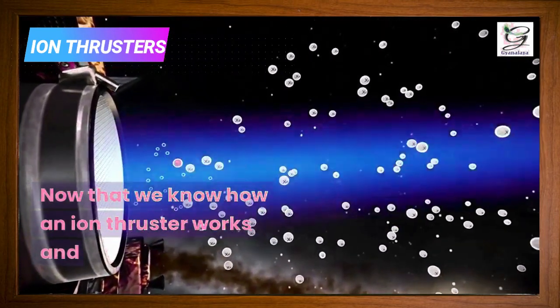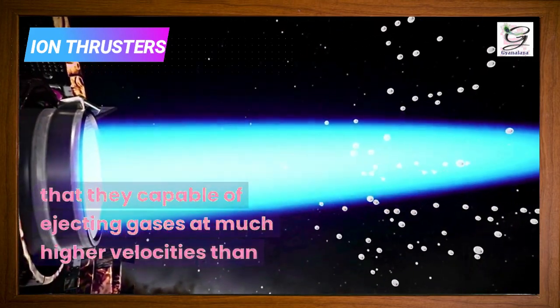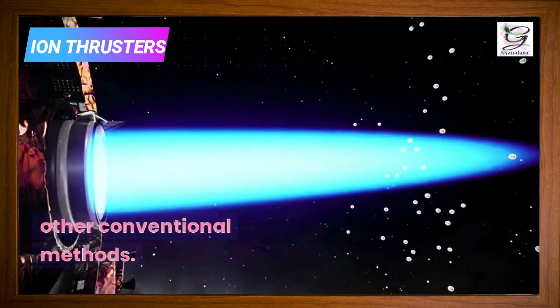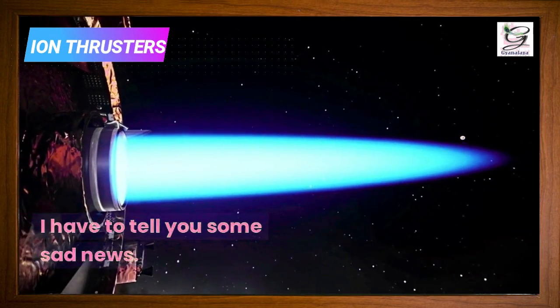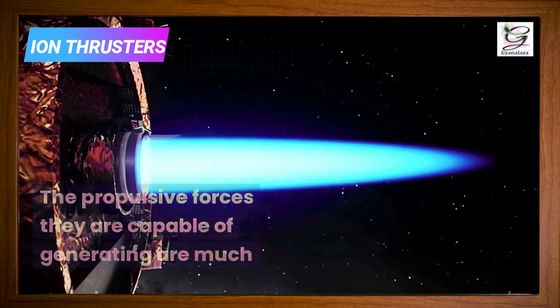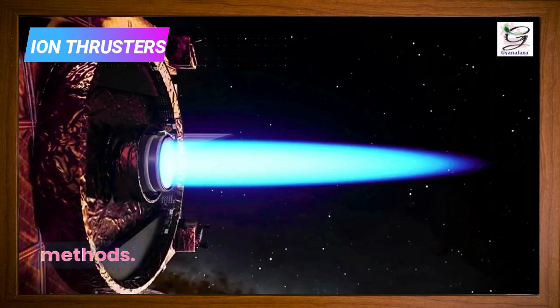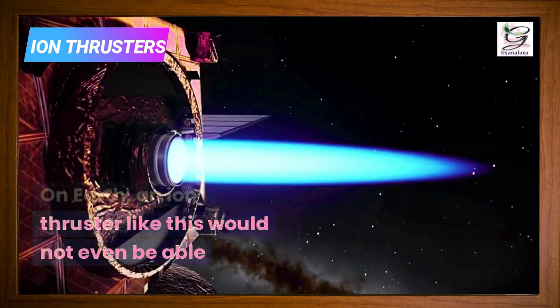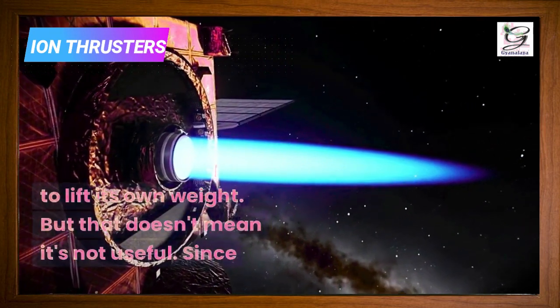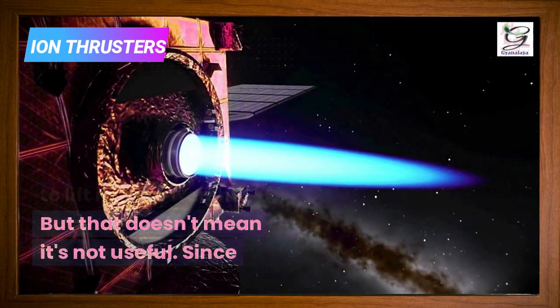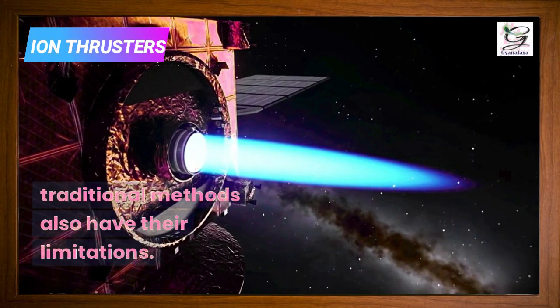Now that we know how an ion thruster works and that they are capable of ejecting gases at much higher velocities than other conventional methods, I have to tell you some sad news. The propulsive forces they are capable of generating are much lower than other methods. On Earth, an ion thruster like this would not even be able to lift its own weight. But that doesn't mean it's not useful, since traditional methods also have their limitations.